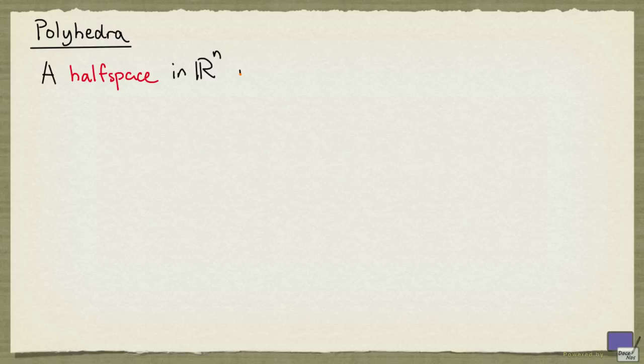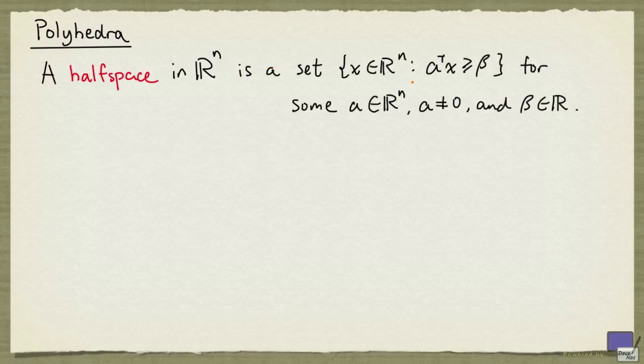A half-space in Rn is a set of the following form. In other words, it's the set of points in Rn satisfying a single non-trivial linear inequality.